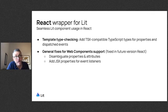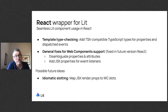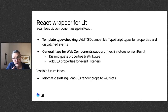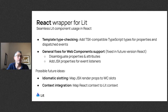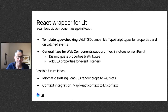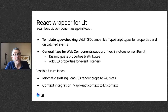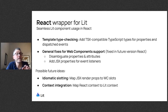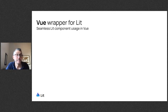There are a couple of other ideas we're thinking about adding to the React wrapper — things like idiomatic slotting so that JSX render props could map to Web Component slots without having to write the slot attribute, or context integration mapping React context to the community protocol that LIT implements that Justin covered earlier in his labs talk. These are just the little extra things we can do in a wrapper to make LIT components really seamless.